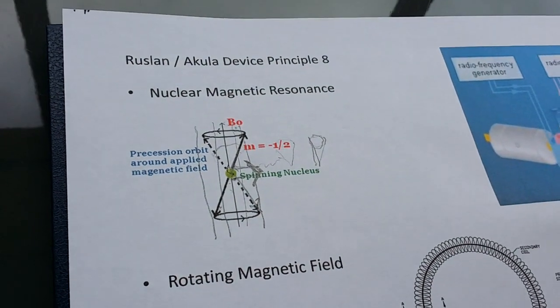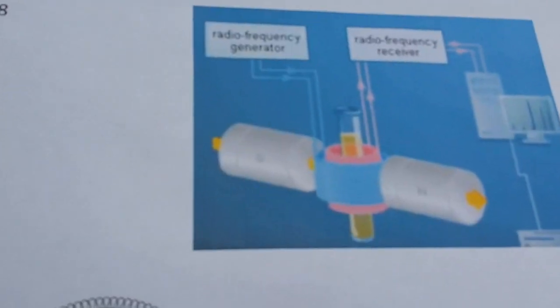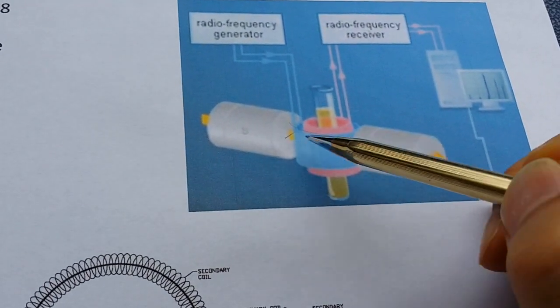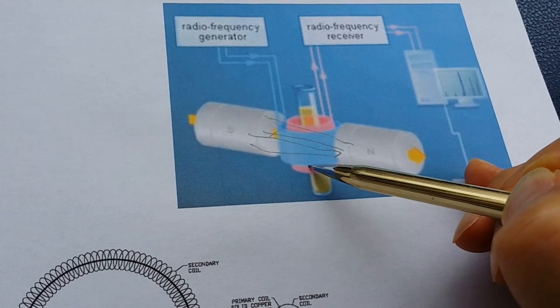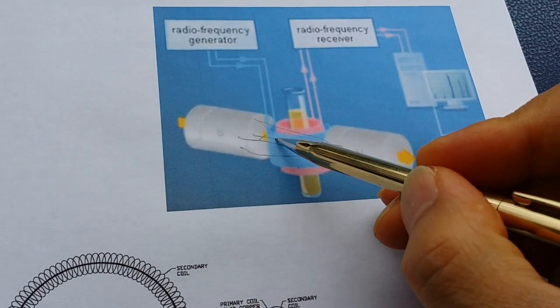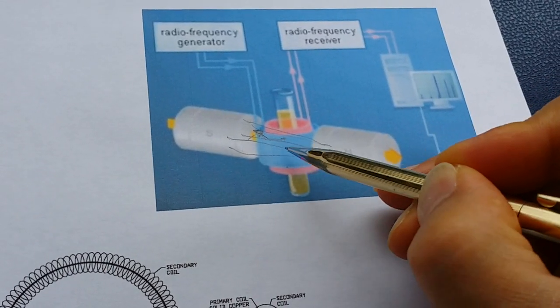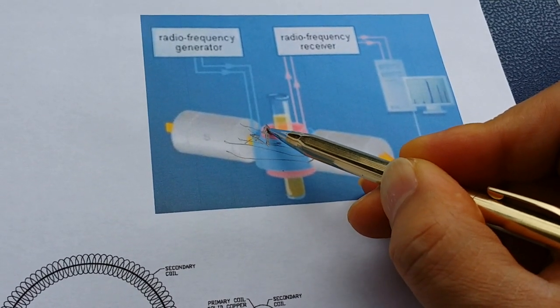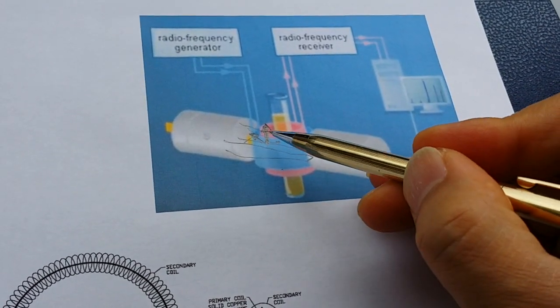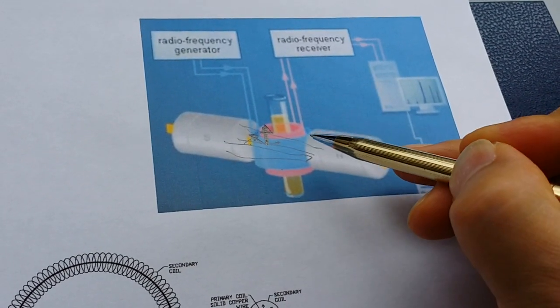Looking at the real device, when there is a strong magnetic field and then an excitation — shown in blue — the magnetic spin flips to the other direction. Because of the excitation, the magnetic direction changes. And when the excitation is gone, it goes back. That's the classic nuclear magnetic resonance.